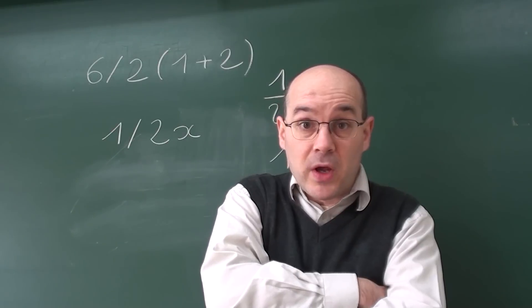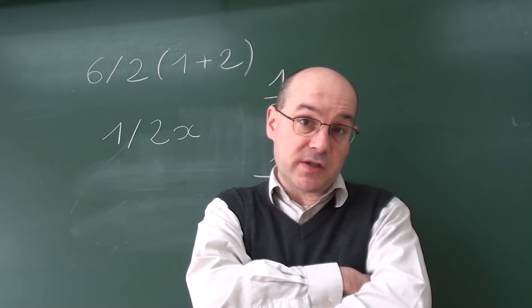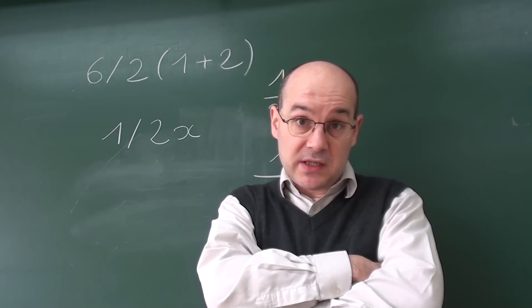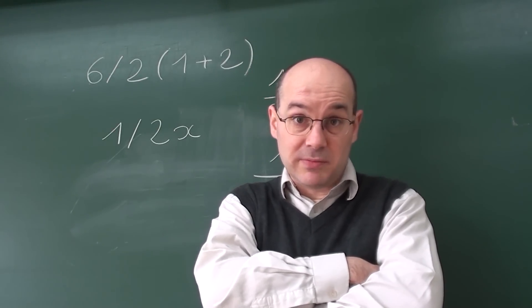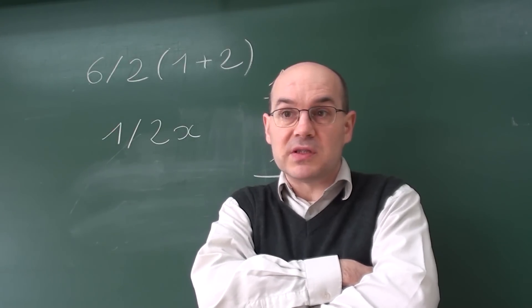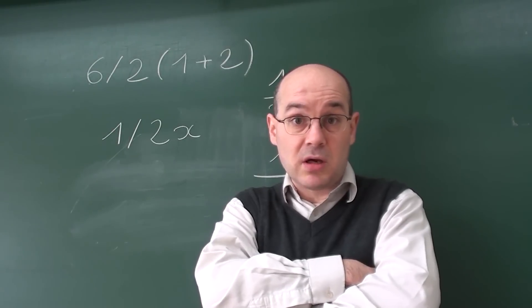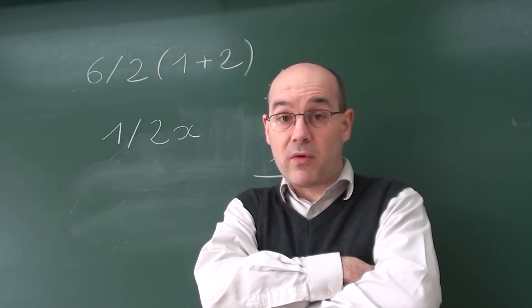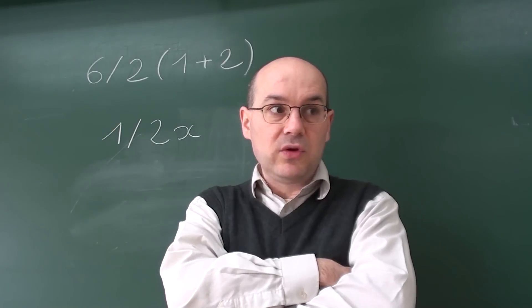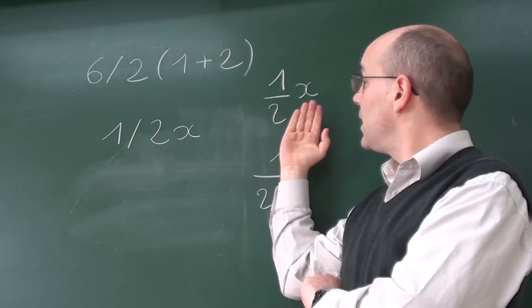The standard one, which uses strictly the order of operations, saying that the division has precedence because it's on the left of the multiplication. Whether or not there's a sign is not relevant. There's an operation, which is a multiplication, and it's on the right of the division. So the division has the priority. So, if you use these standard rules, then you get this.